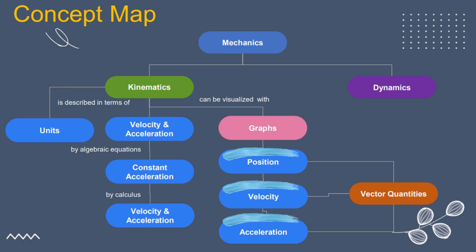Kinematics can be described in terms of units, such as meters, meter per second, and meter per second squared.